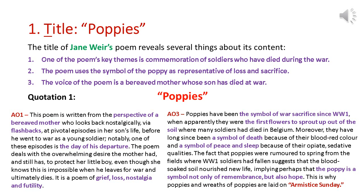For assessment objective three, we need to be aware that poppies have been the symbol of war sacrifice since World War One, when apparently they were the first flowers to sprout up out of the soil where many soldiers had fallen and died in Belgium. They've also been a symbol of death because of their blood-red colour, and also a symbol of peace and sleep — resting in peace — because of their opiate, sedative qualities. The fact that poppies were rumoured to have sprung from fields where World War One soldiers had fallen suggests the blood-soaked soil nourished new life, implying the poppy is a symbol not only of remembrance but also hope for the future — that's why poppies are laid on Armistice Sunday, which is referenced in the poem.